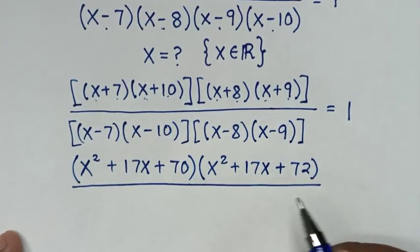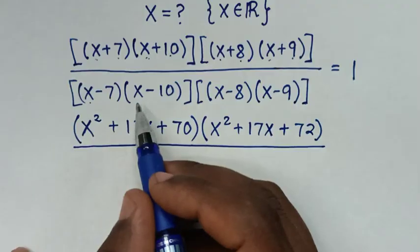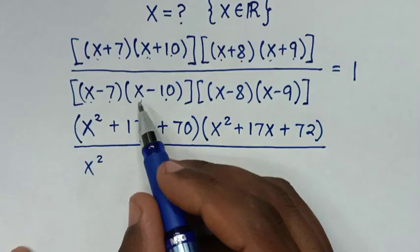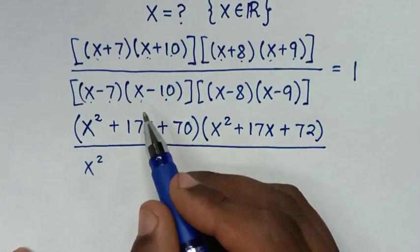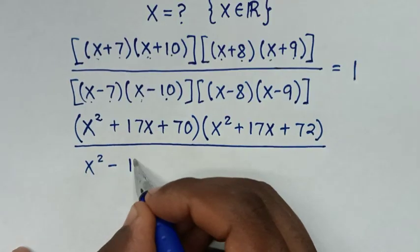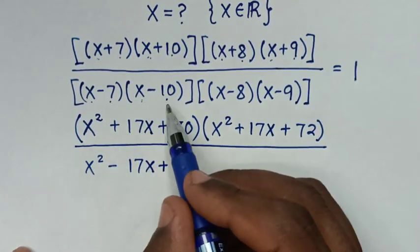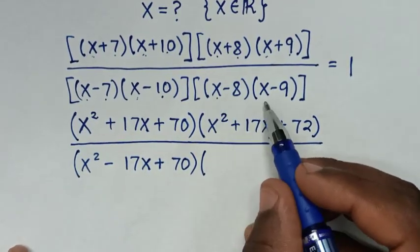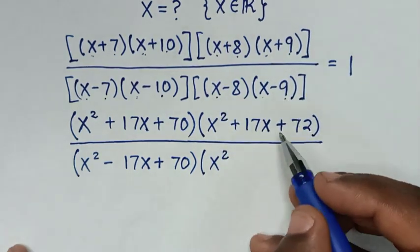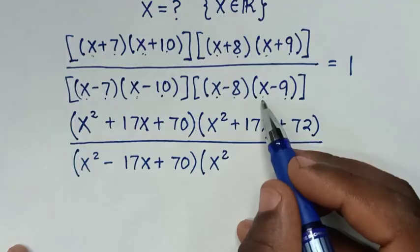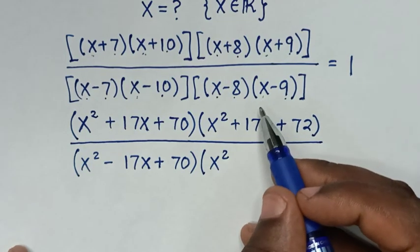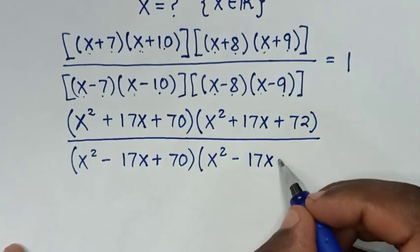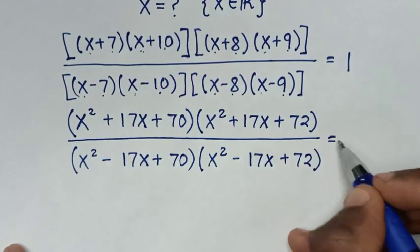In the denominator: (x-7)(x-10) gives x squared, negative 10x, negative 7x — so negative 17x — then plus negative 7 times negative 10 is positive 70. Then (x-8)(x-9) gives x squared, negative 17x, then negative 8 times negative 9 is positive 72. This equals 1.